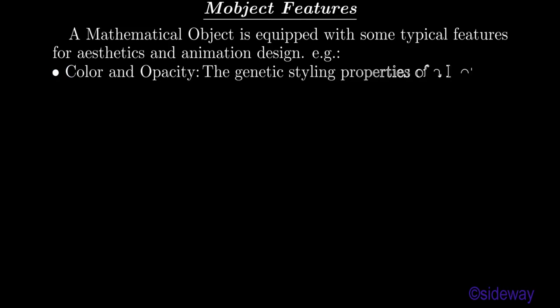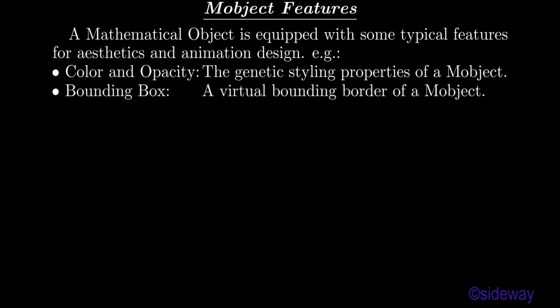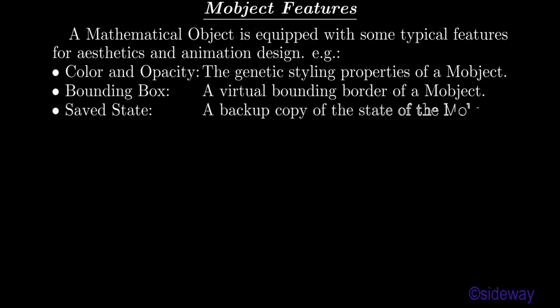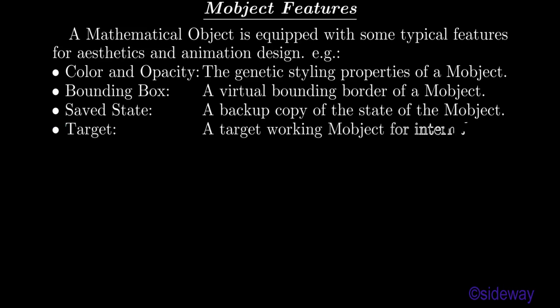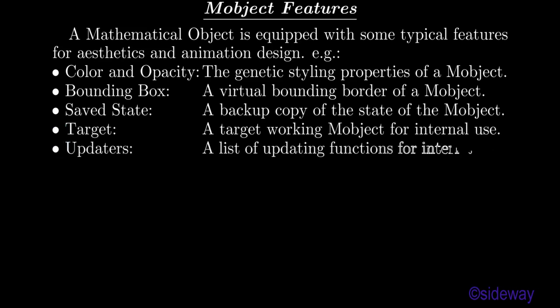Mobject Features. A mathematical object is equipped with some typical features for aesthetics and animation design. For example: color and opacity, the generic styling properties of a mobject; bounding box, a virtual bounding border of a mobject; saved state, a backup copy of the state of the mobject; target, a target working mobject for internal use; and updaters, a list of updating functions for internal use.